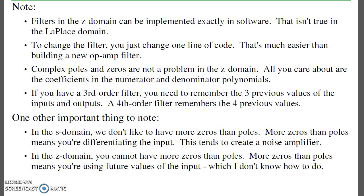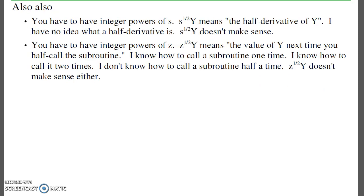So a couple things to note. In Z domain, I can implement the filters exactly. To change the filter, I just have to change one line of code. Complex poles and zeros are very easy. It's just the root of a polynomial. I could really care less what the roots are. It's just a bunch of numbers. Also to note, in the S plane, I don't like having more zeros than poles, because then I differentiate, and differentiation amplifies noise. In the Z plane, I cannot have more zeros than poles, because more zeros than poles means I'm predicting the future. That can't be done. Also, you have to have integer numbers in the S and the Z terms. S to the half, for example, means the half derivative, which doesn't make any sense. In the Z plane, Z to the half means half an interrupt in the future. You can interrupt one time, I can interrupt twice, I can interrupt three times. You can't do half an interrupt. You can't call half a subroutine. So likewise, all the powers of Z have to be integers.